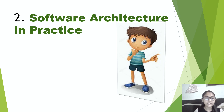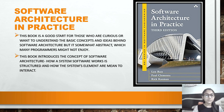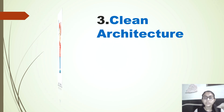The second on the list is 'Software Architecture in Practice.' This book is a good start for those who are curious and want to learn the basic ideas and concepts behind software architecture, but it sometimes gets abstract, which many programmers might not enjoy. This book introduces the basic concepts of software architecture — how system elements work, how the system is structured, and how the system elements are meant to interact.